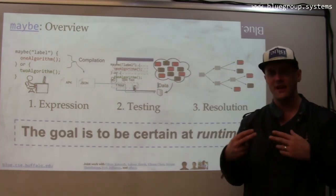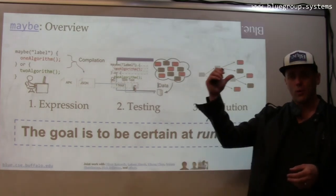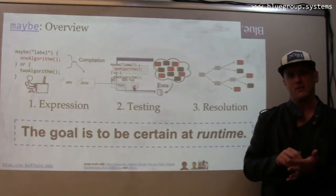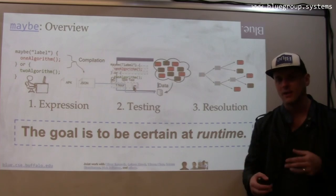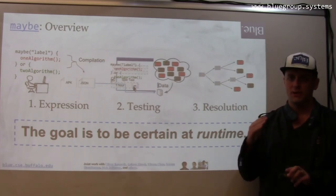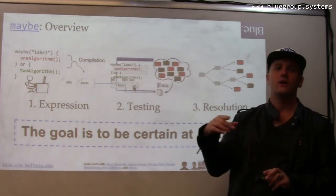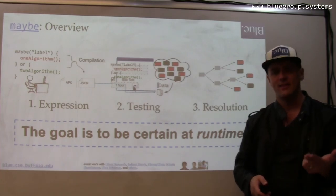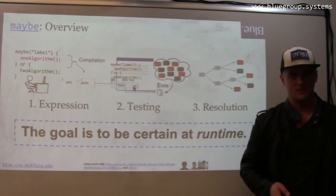And the goal here is to eventually be certain. So when I get to runtime, I want to make good decisions. I don't want to be doing experiments at runtime. I can in certain cases, but I don't want to. When I hit this branch, I want to know what to do on that particular device at that time for that user under those conditions. That's the goal.